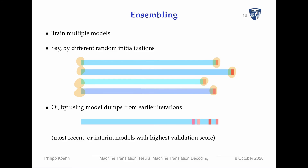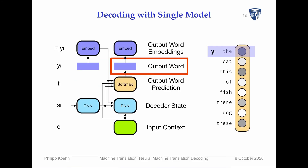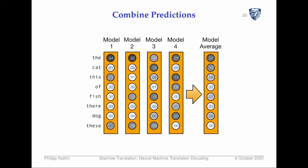A cheaper way to get multiple models to ensemble is to train a model once but then take different model checkpoints from a single run and combine these. If you have multiple models and feed in the same previous words, each model will have a different probability distribution over output words. One very easy way to combine four models is to just take the average of these predictions — that is then the final prediction about what the next word should be.